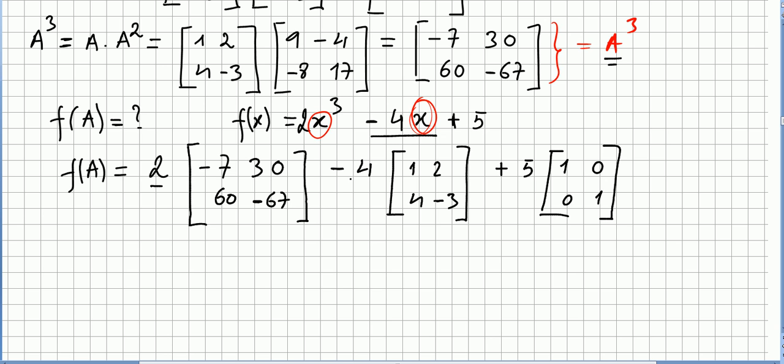Minus 4x, so minus 4x, I'm using the original matrix, right, 1, 2, 4, minus 3. I hope I did not make any silly mistake here. Plus 5.